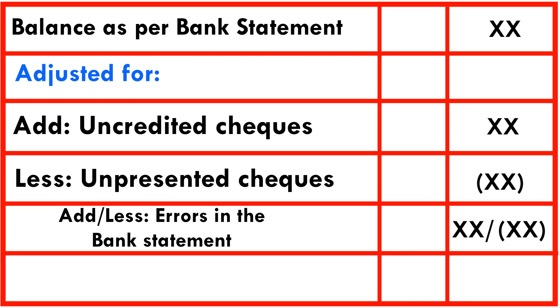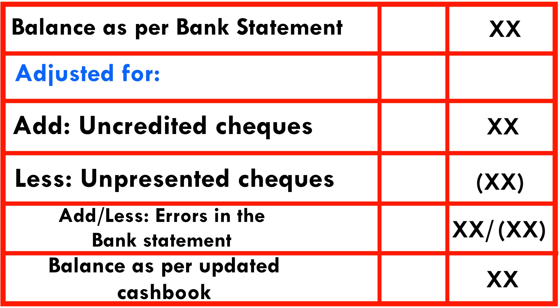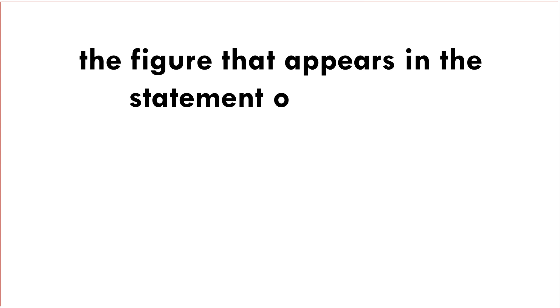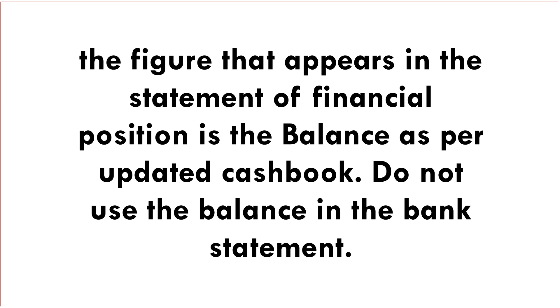Again, the reason for 'add or less' is because it depends on the effect that the error has on the balance in the bank statement. If the error has led to an overstatement of the balance, then we need to deduct it; but if it has led to an understatement, we need to add it back. This gives us the balance as per the updated cash book — we've reconciled them now. A critical point to note is that the figure that appears in the statement of financial position as bank balance is the balance as per the updated cash book. Do not use the balance as per the bank statement, as this is not part of the double entry — it is not a general ledger.